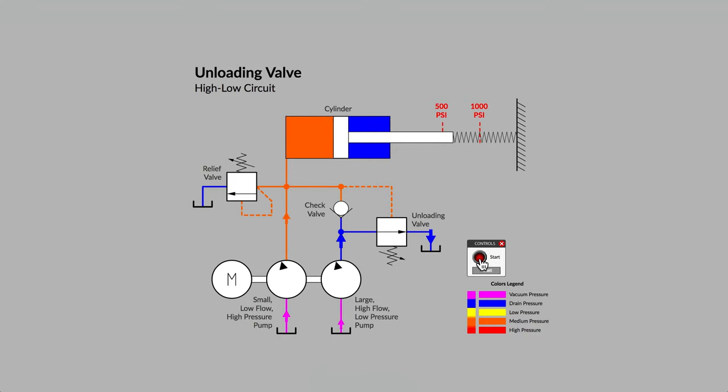What makes the unloading valve symbol unique is the presence of a check valve, which is a one-way valve, between the inlet port of the unloading valve and the pilot line that triggers the unloading valve. When the unloading valve opens, we only want the flow from the right-hand pump to pass through. The check valve prevents flow from the left-hand pump from escaping to tank.